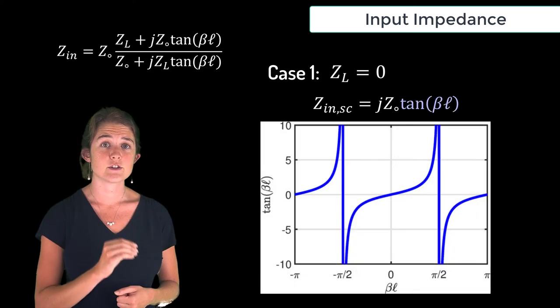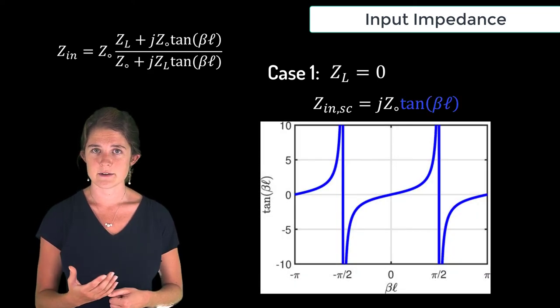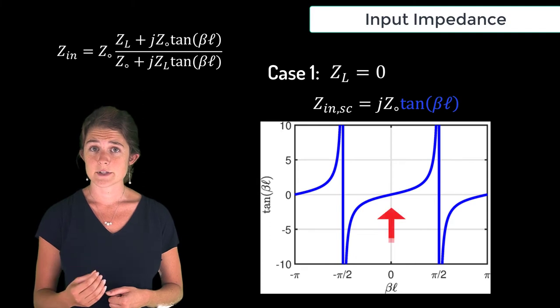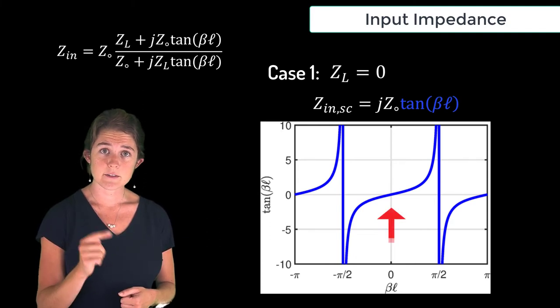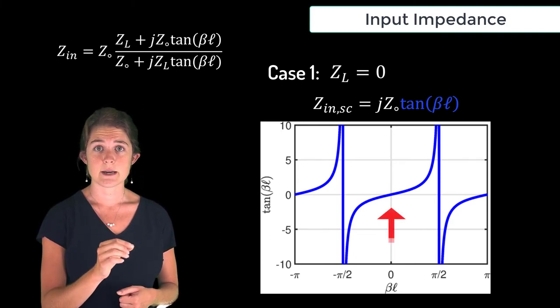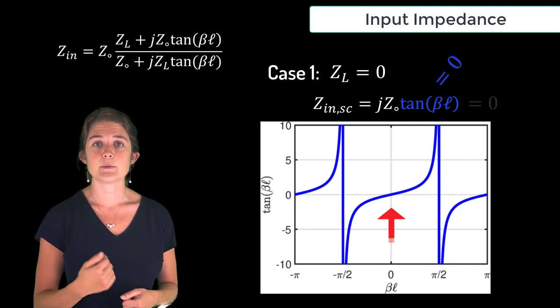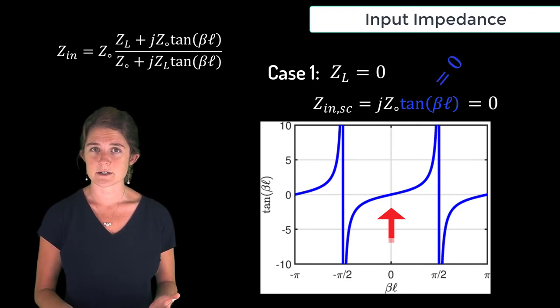This is a graph of tangent beta L with respect to beta L. Note that if L equals zero, if you're looking directly at the load, tangent beta L is zero and the input impedance is zero as you would expect for a short circuit.